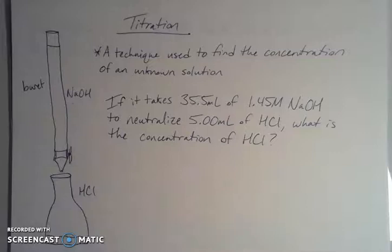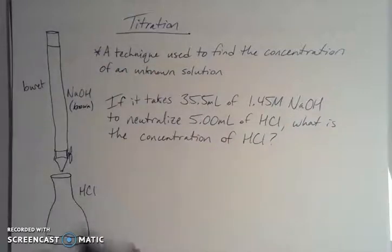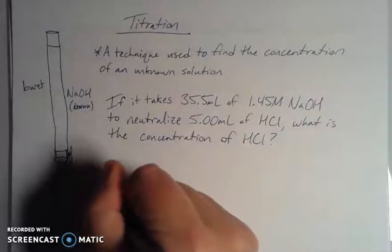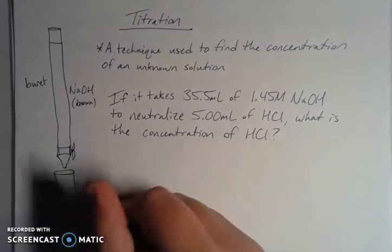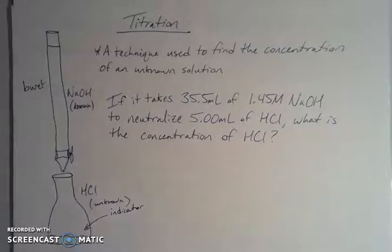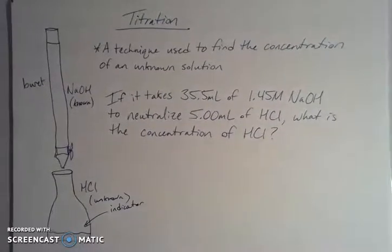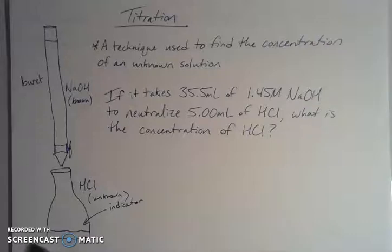If you have sodium hydroxide in the burette with some known concentration, and HCl in the flask with an unknown concentration — it doesn't have to be that way, it could be the other way around. Within the HCl there's some sort of indicator. Acid-base indicators are solutions that change color when they react with specific pH values. Phenolphthalein is a good one used for strong acid-strong base neutralization reactions because it turns a light pink right at the neutralization point.